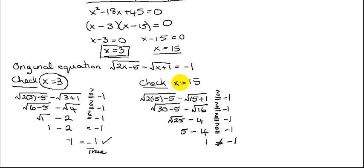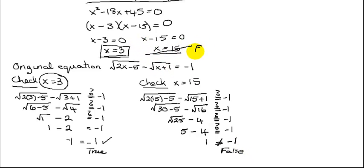Now checking x equals 15 in the original equation: the square root of 2 times 15 minus 5 is the square root of 25, which is 5. The square root of 15 plus 1 is the square root of 16, which is 4. Does 5 minus 4 equal negative 1? No — 5 minus 4 is 1, and 1 does not equal negative 1. That is a false statement, so x equals 15 is an extraneous solution. We get just one solution: x equals 3.